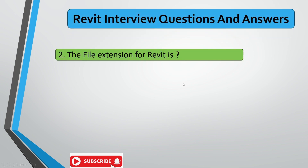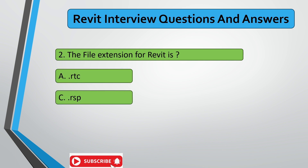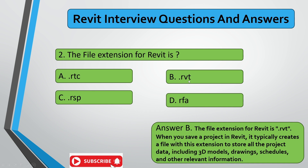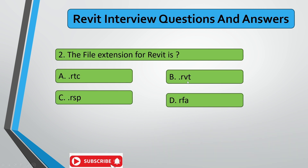The next question is: what is the file extension for Revit? The correct answer is .RVT. RVT means Revit file — it is the extension for saving a Revit project file. It stores all the project data including 3D models, drawing schedules, and other relevant information. Note that .RFA is a family-related extension. The correct answer is .RVT.